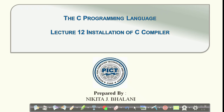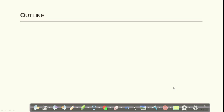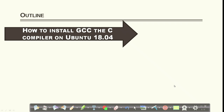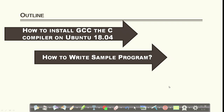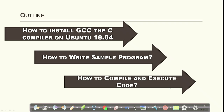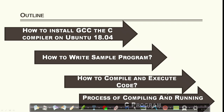Welcome to the tutorial on the C programming language. This is our 12th lecture, in which we will discuss the installation of the C compiler. C is a high-level programming language that cannot be directly understood by a computer, so we need to convert it into machine-readable form using a compiler. The outline covers: how to install GCC in Ubuntu 18.04, how to write a simple program, how to compile and execute it, and the overall process of compilation.